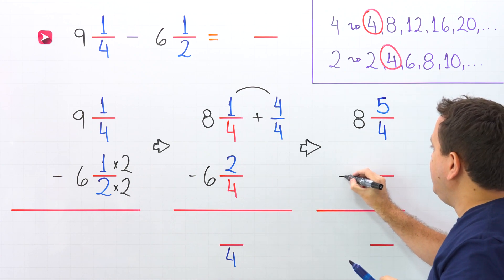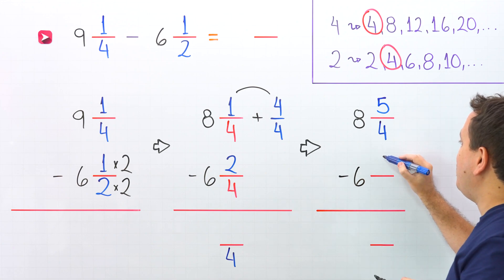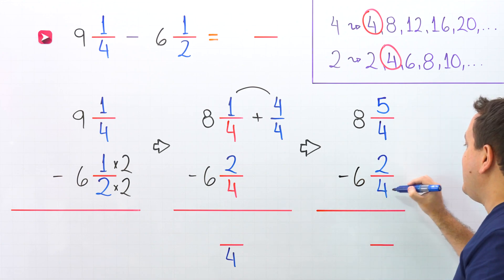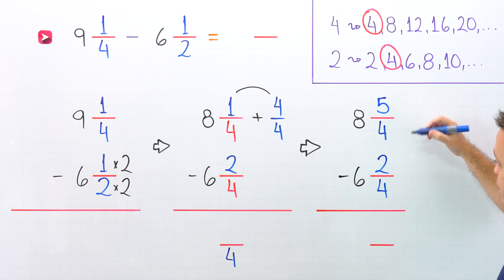The second mixed number is 6 and 2 fourths. Now, to find the difference of these numbers, we'll start by subtracting the fractions. 5 fourths minus 2 fourths. These fractions have the same denominator, 4.